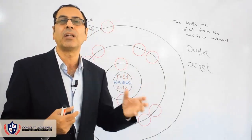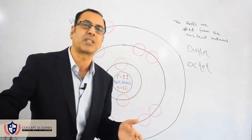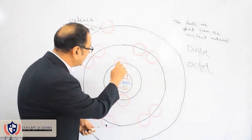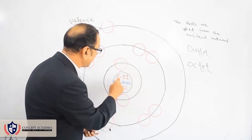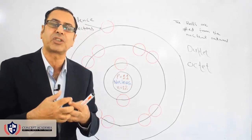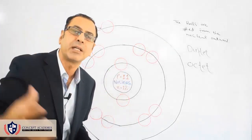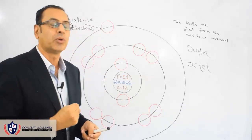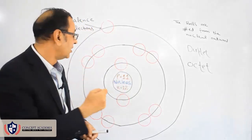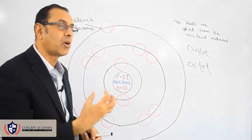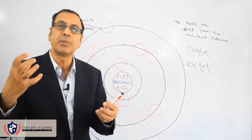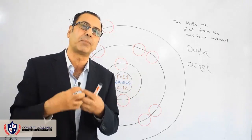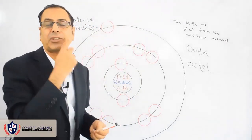Electrons revolve around the nucleus to get the force of attraction from the nucleus. Protons attract electrons. The first shell electrons are near the proton and experience maximum force of attraction. Because they are more controlled by the proton, the first shell electrons have less energy — they are more attracted by the proton with a stronger force of attraction.